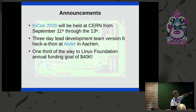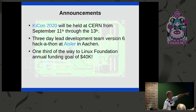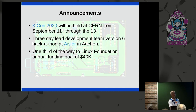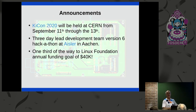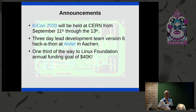A couple of announcements: KiCon 2020 — if you missed last year's, you definitely want to make this year's. It's going to be at CERN in Geneva, Switzerland, from September 11th through September 13th. Tickets haven't gone on sale yet, but keep an eye on the KiCad website blog — I suspect tickets will go pretty quickly. If you're in Europe in September and interested in going to CERN to talk about all things KiCad, please come to that conference. Also, Monday through Wednesday of next week, quite a few members of the lead development team will go up to Aachen for a hackathon for three days to work on KiCad — it's rare when we all get a chance to sit down and work together.